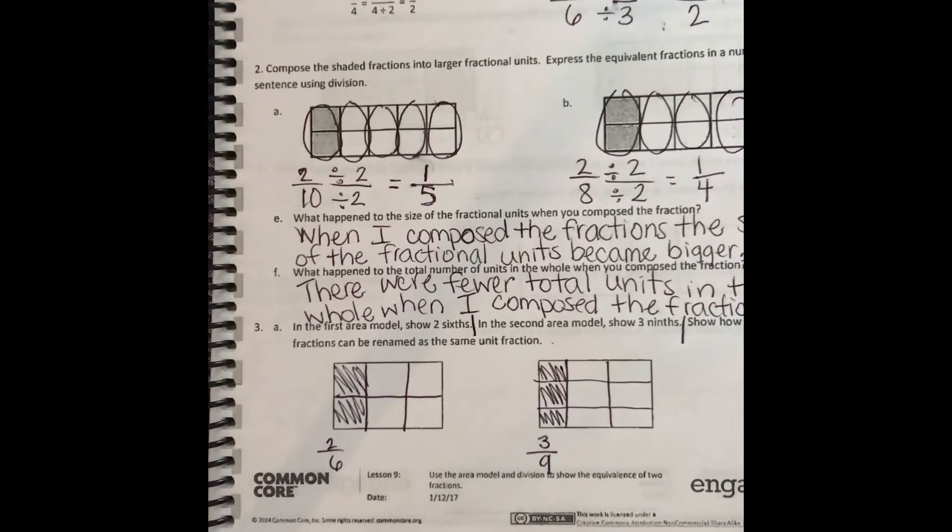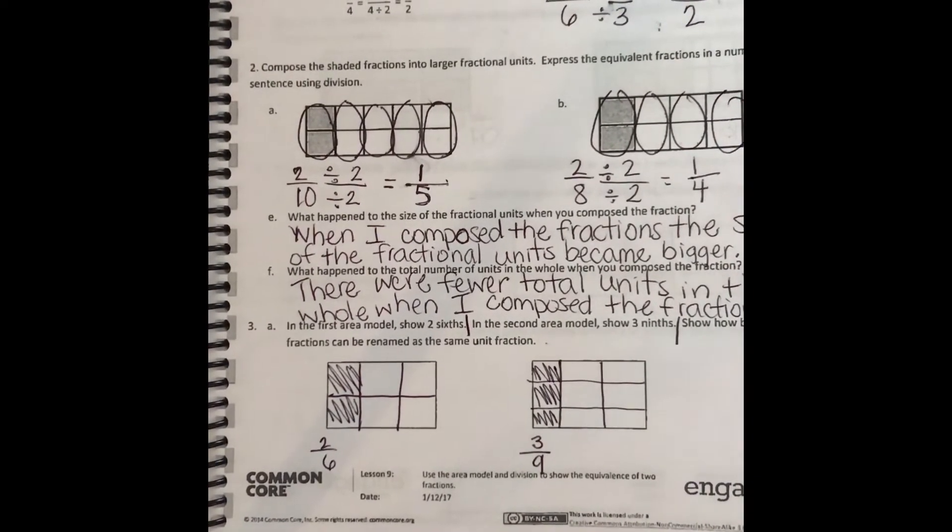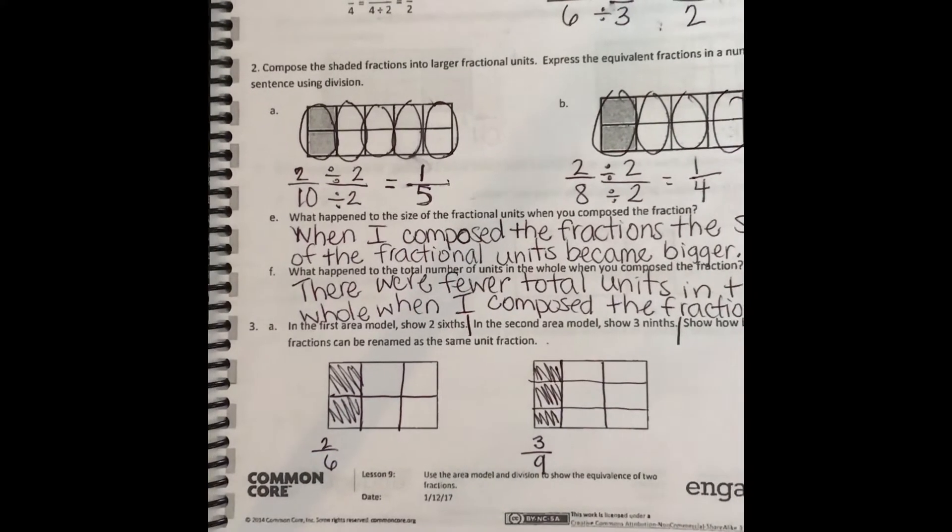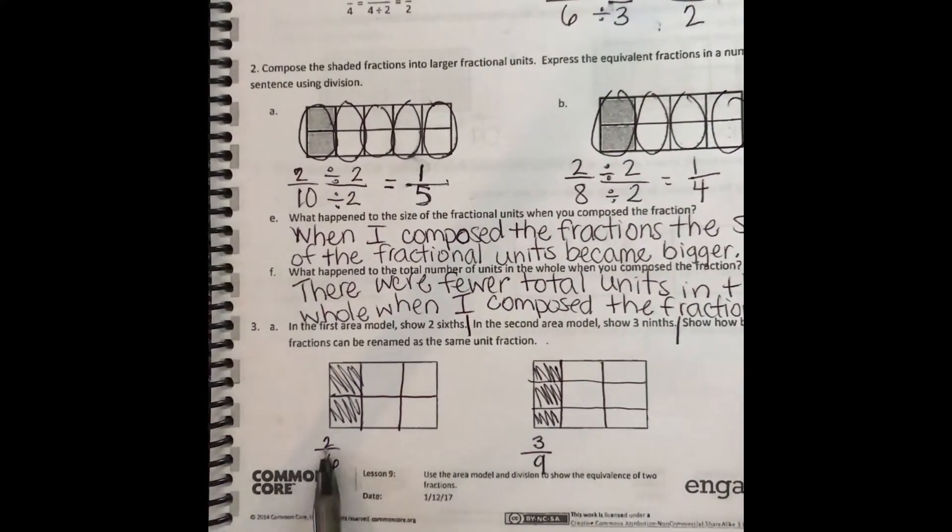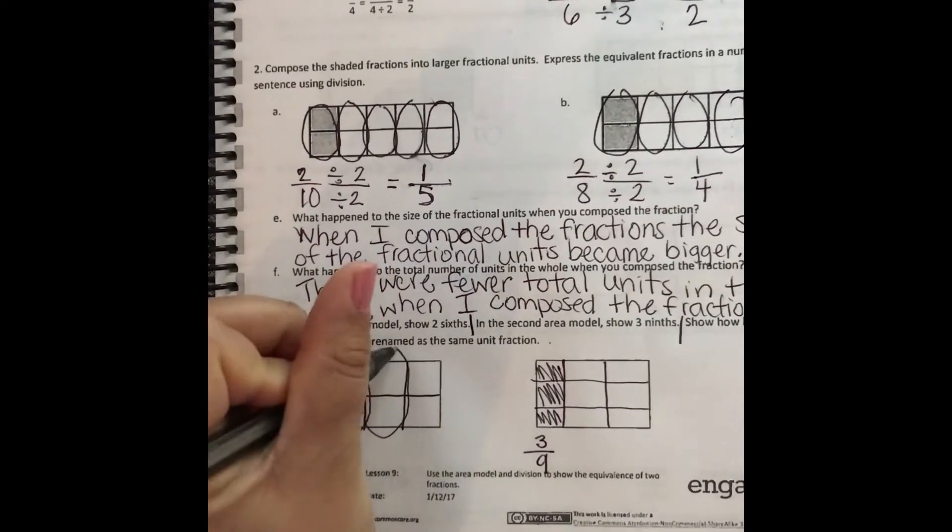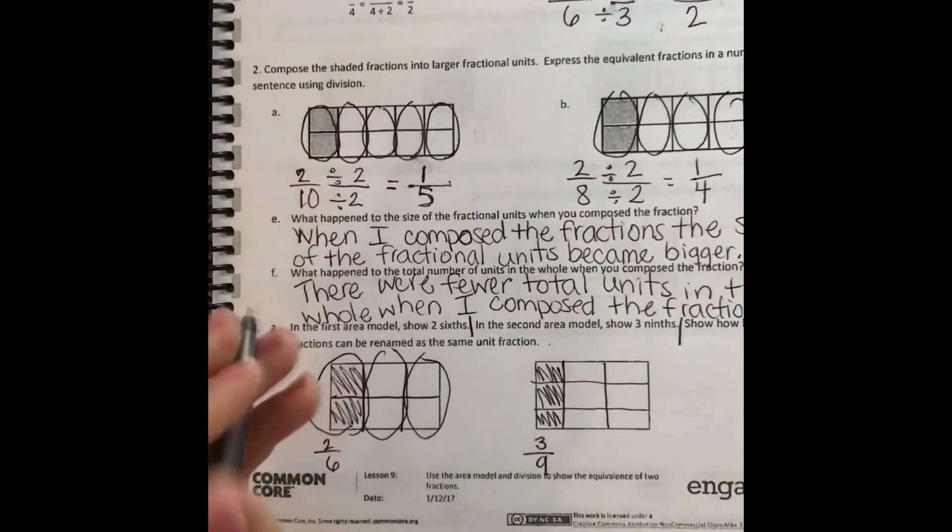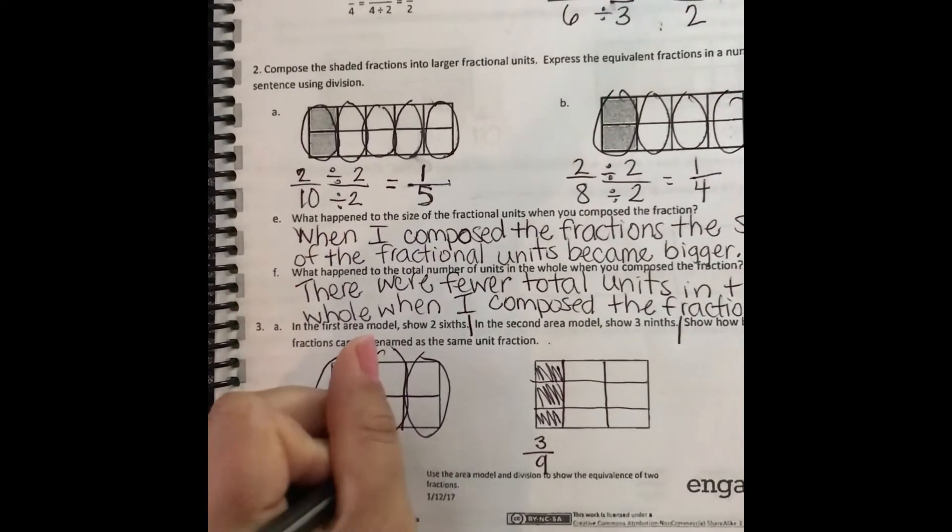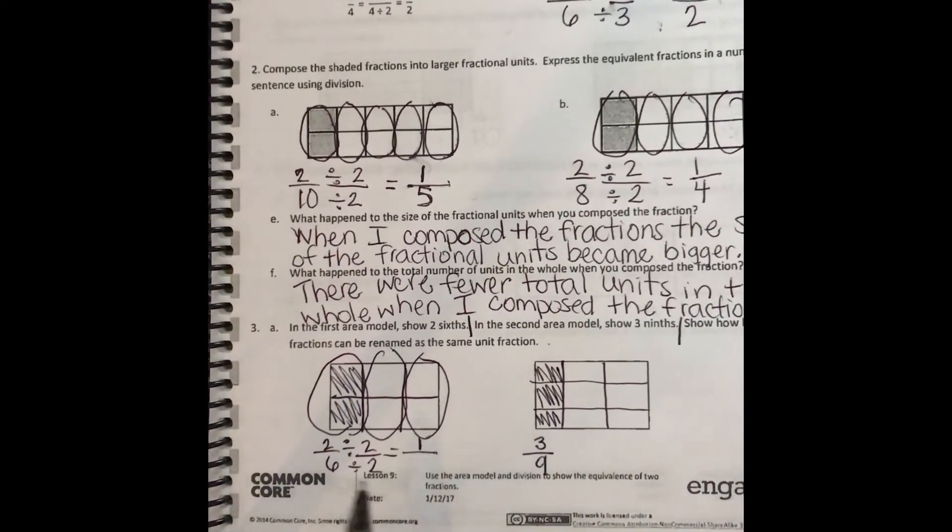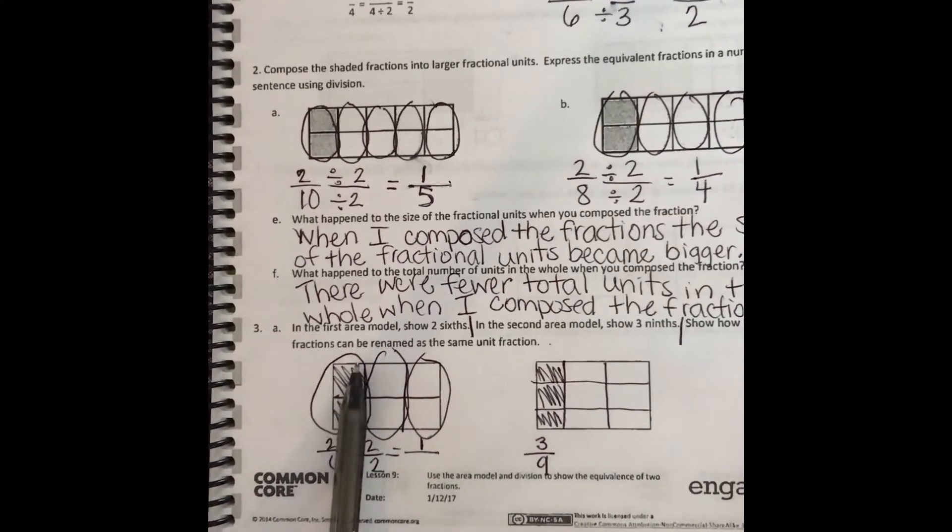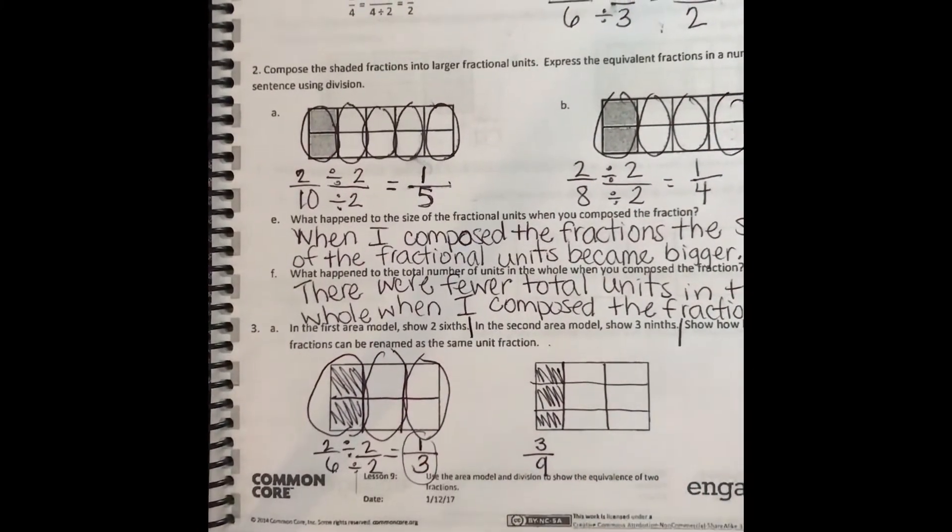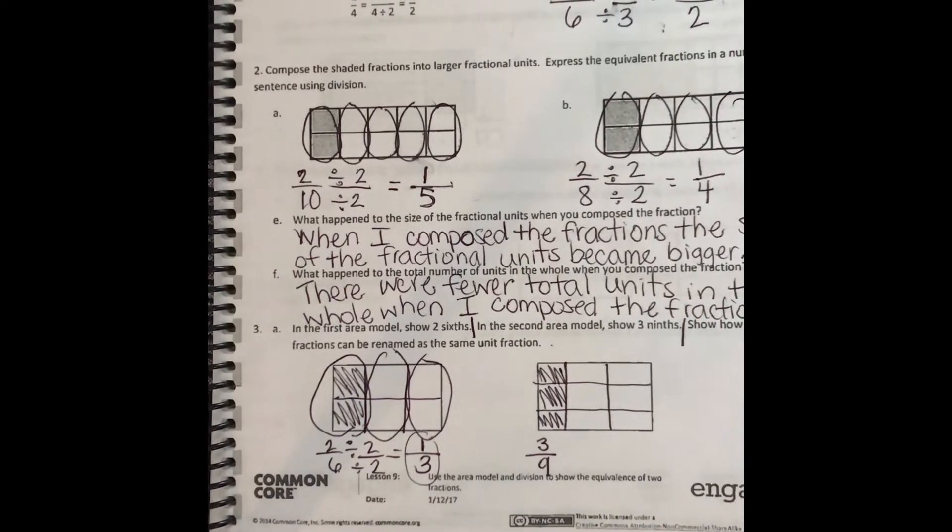Then it says, show how both fractions can be renamed as the same unit fraction. So remember, when I like to decompose it, I like to divide by things that are the same as the numerator. So for example, this one, the numerator is two. So I'm going to divide and see if I can break it up into two parts. So, like, here's one, two, one, two, one, two. If I divide it by two, whatever I do to the top, I do to the bottom. Whatever I do to the bottom, I do to the top. I have one part that's colored in, that's shaded in. And all six of those are how many groups of two? One, two, three.